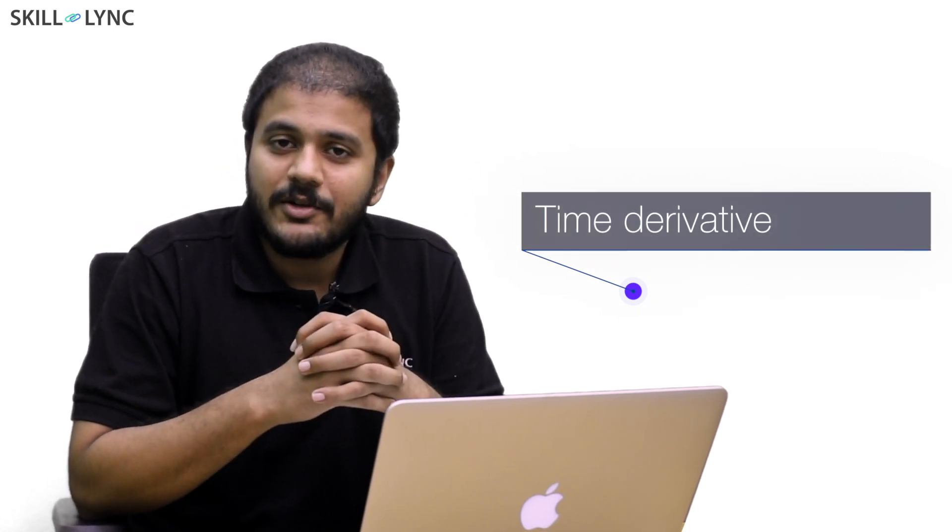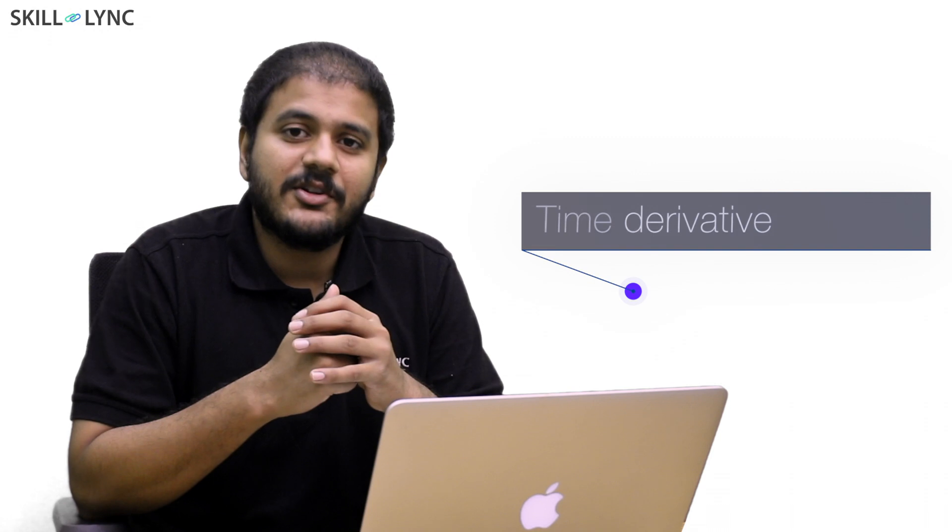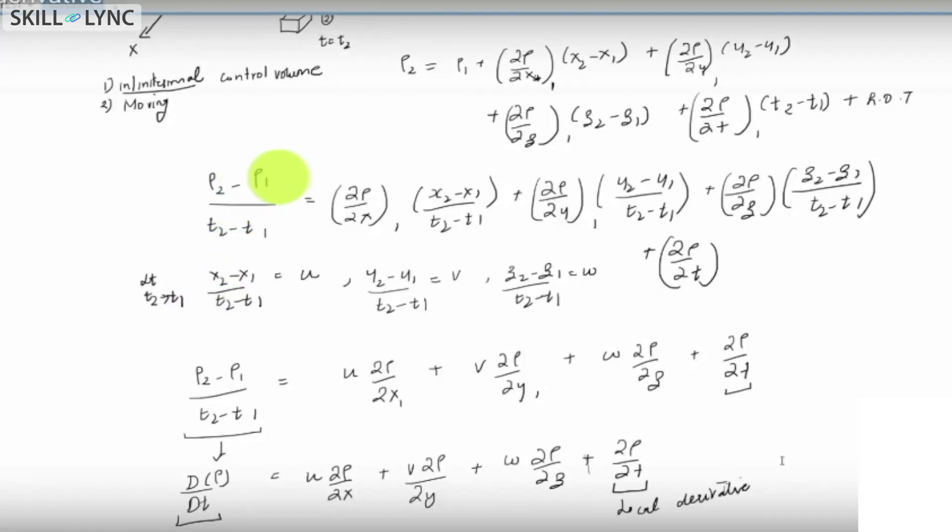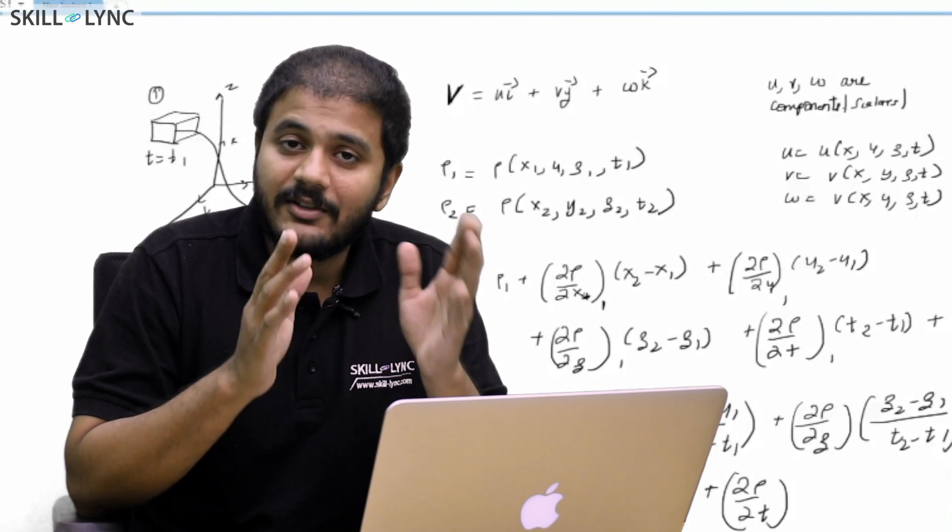If you take a look at the Navier-Stokes equations, it's a second order partial differential equation. You can see that in the momentum equation you have some time derivatives. For example, here I have rho 2 minus rho 1 by t2 minus t1. This is what you call a time derivative.